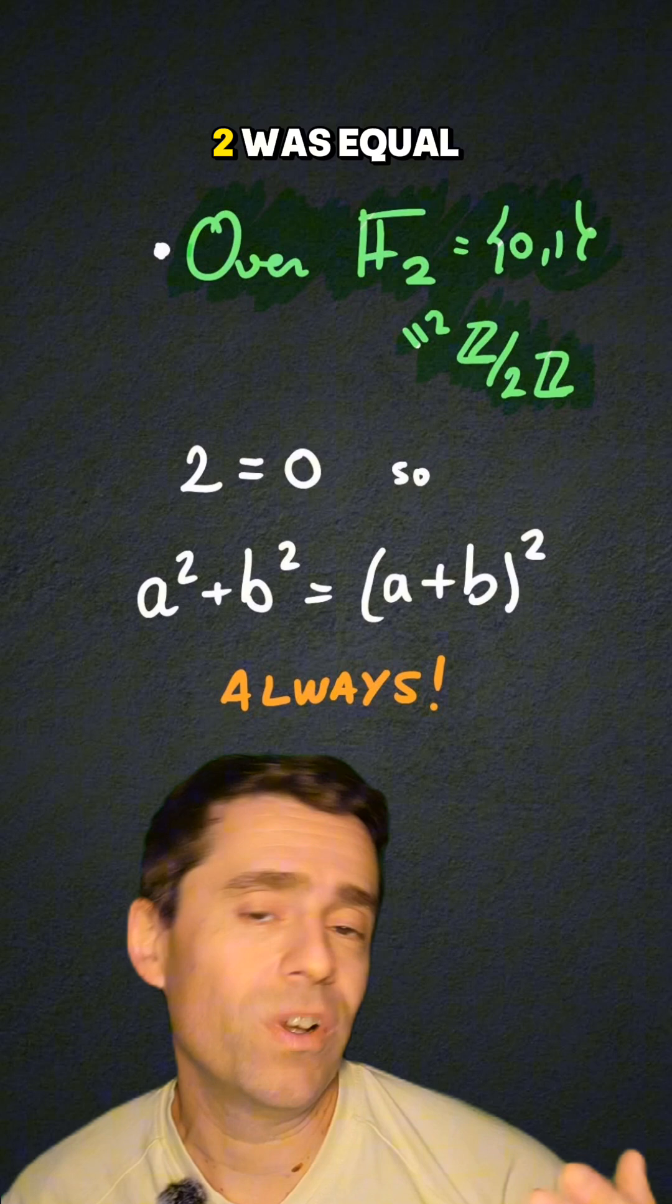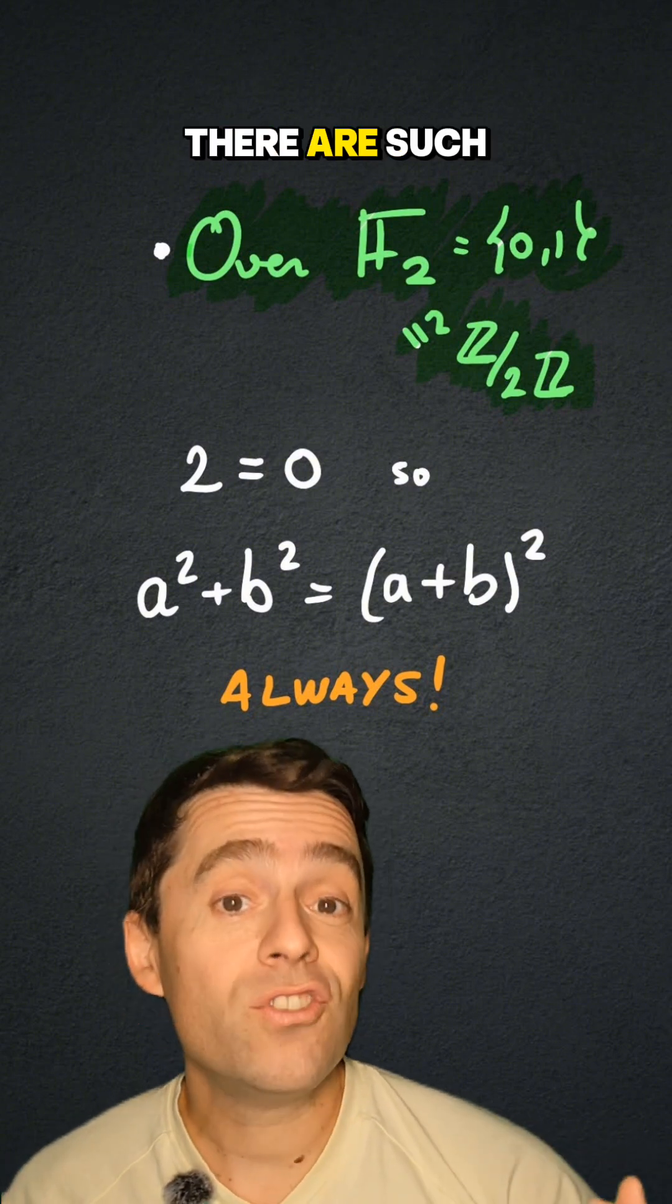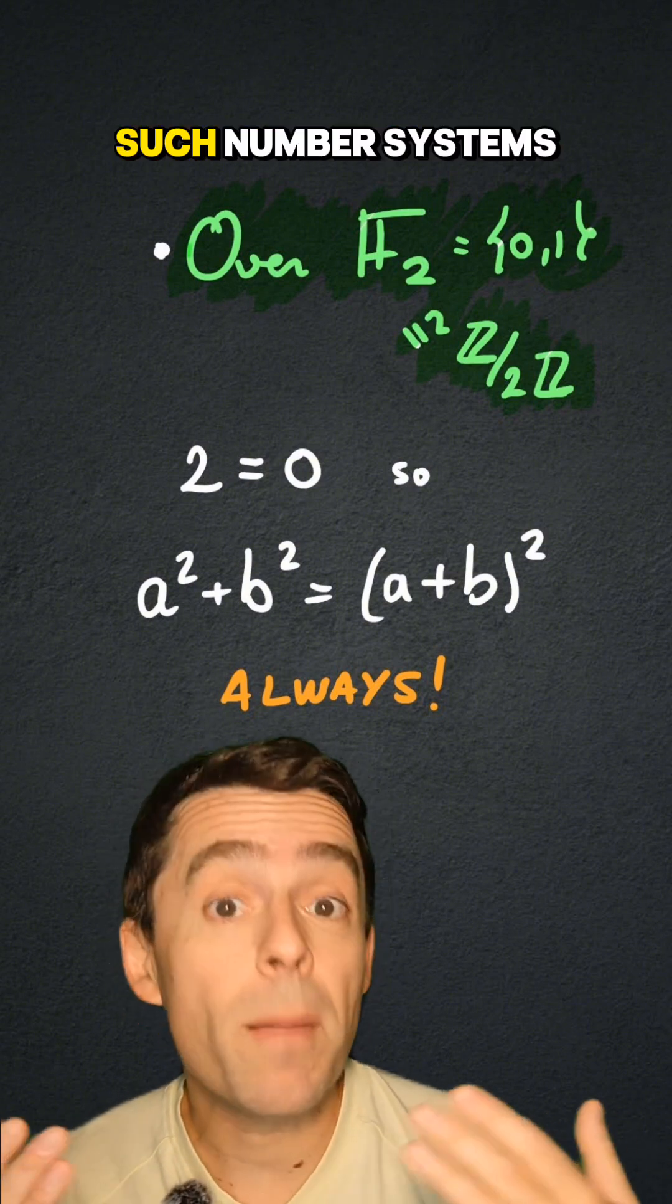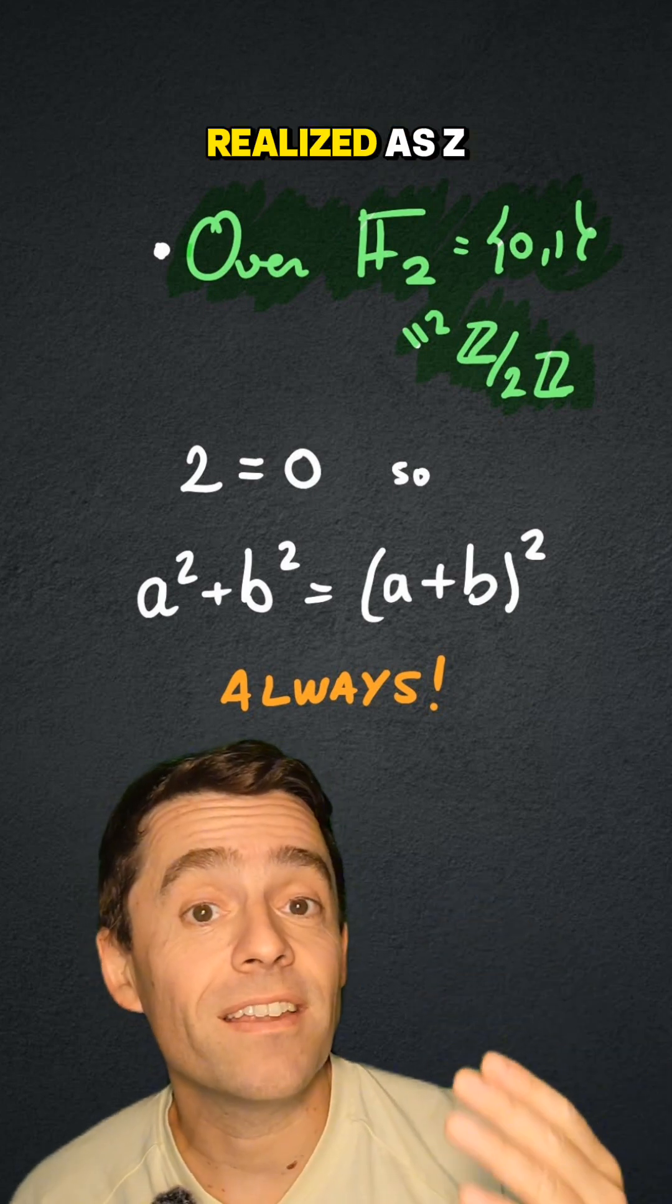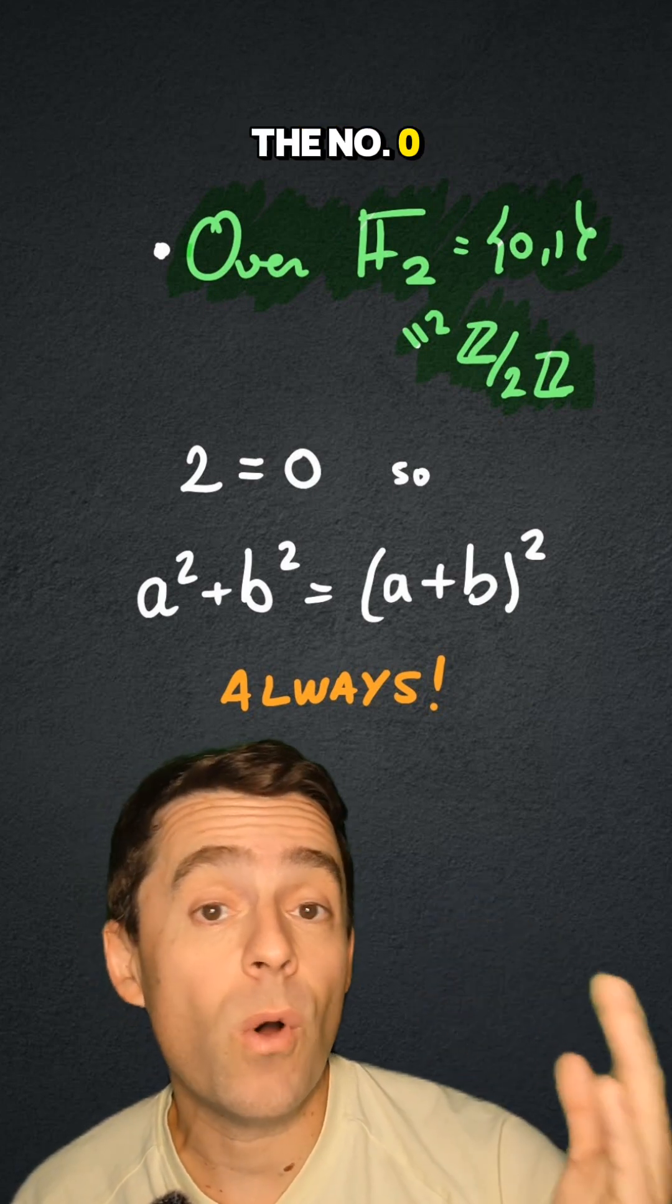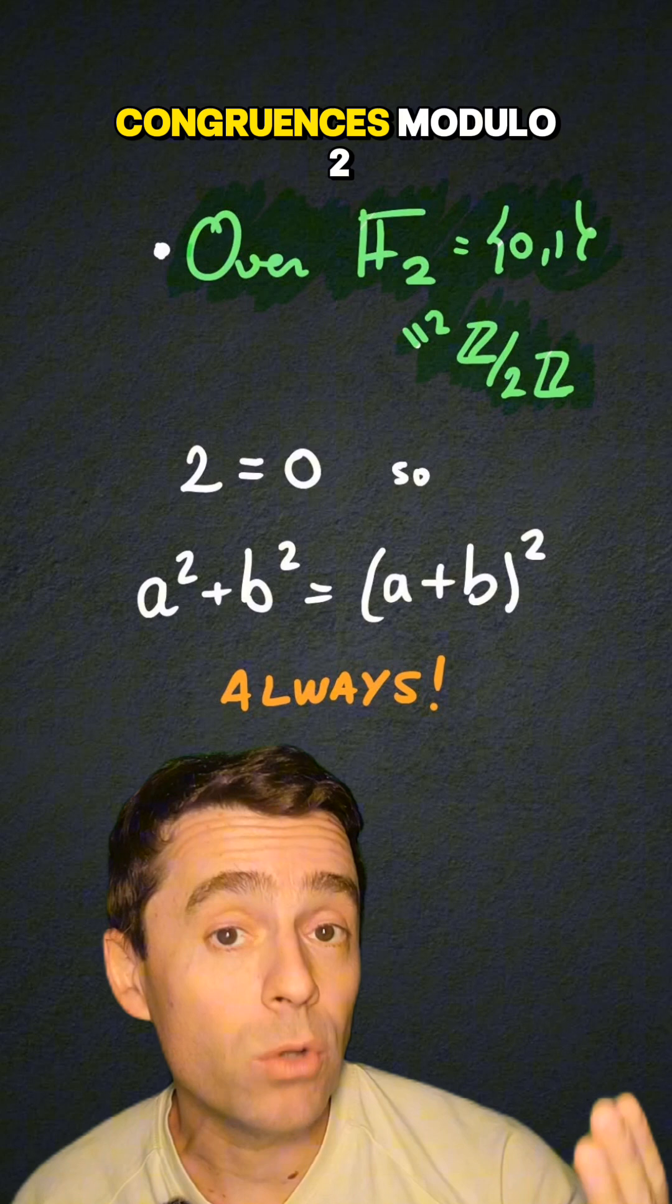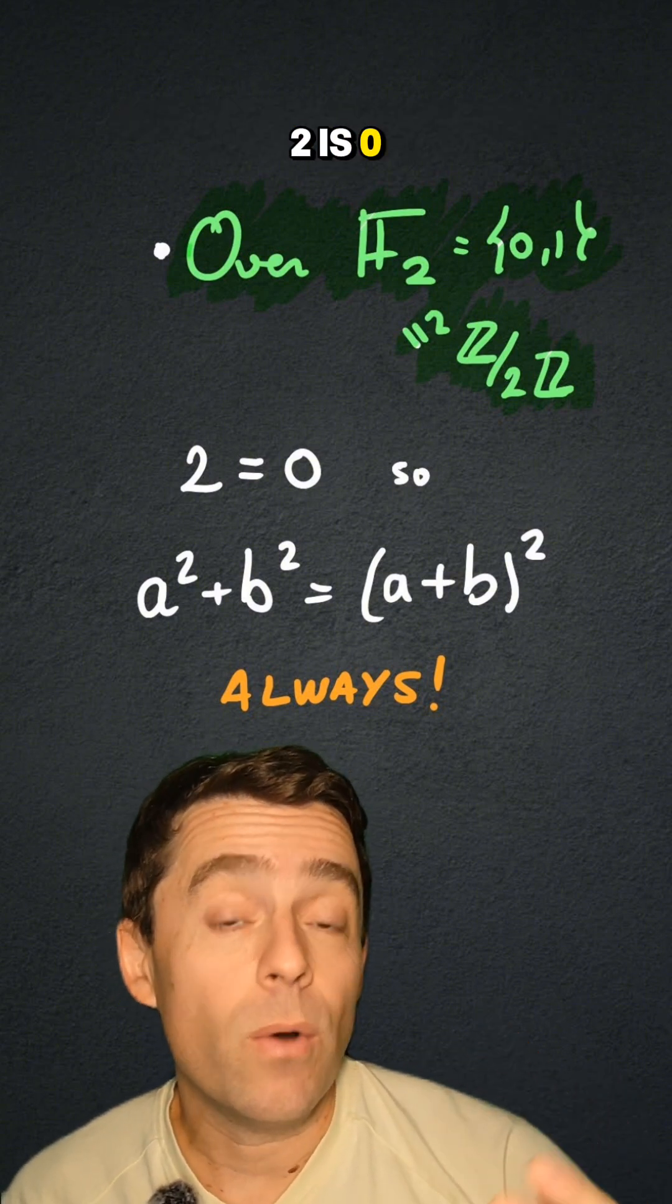But what if 2 was equal to zero? There are such rings, such fields, such number systems, such as F2, which can be realized as Z modulo 2, the numbers 0 and 1 under congruences modulo 2, where the number 2 is zero.